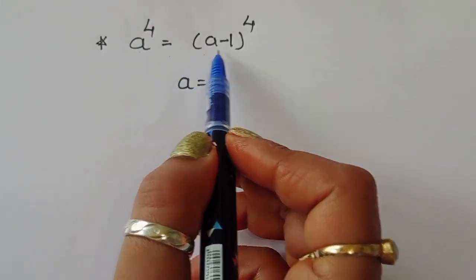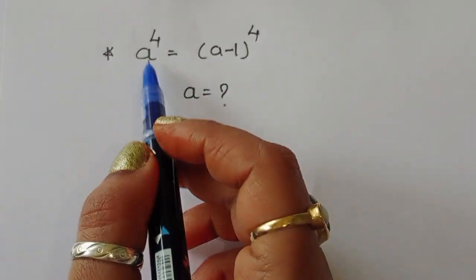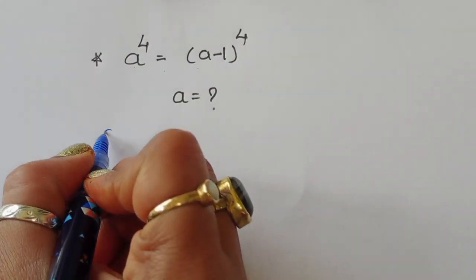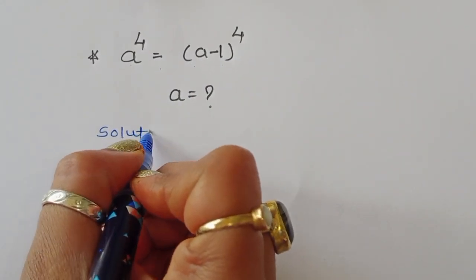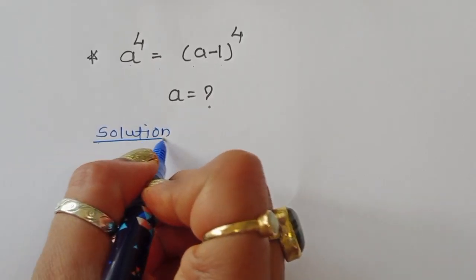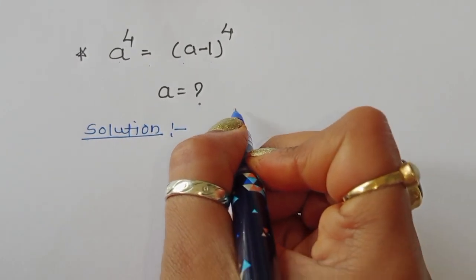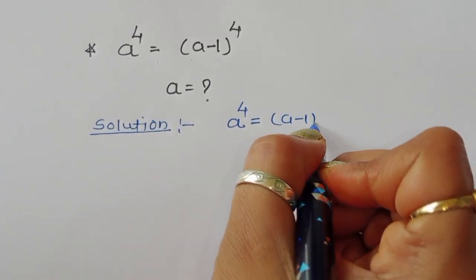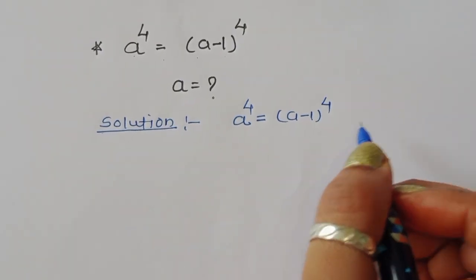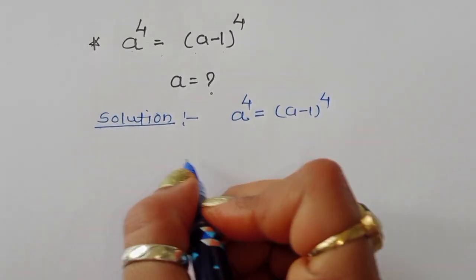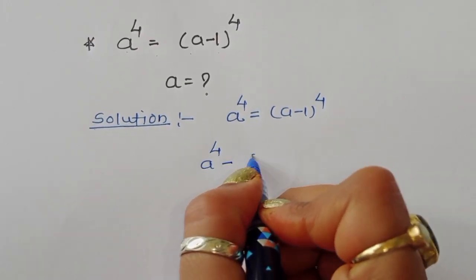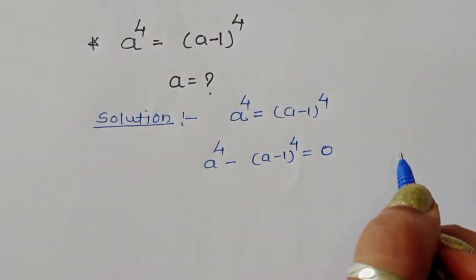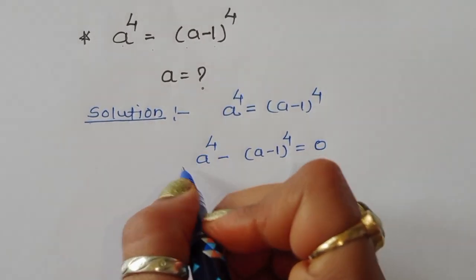Given a power 4 is equal to a minus 1 power 4, we have to find out the value of a. Let's see the solution. We can write this as a power 4 minus a minus 1 power 4 is equal to 0.